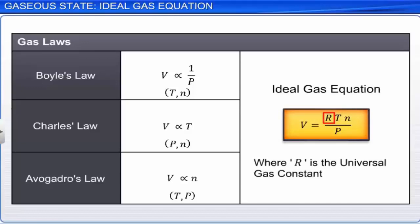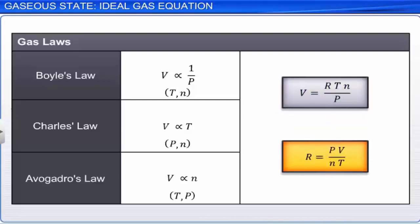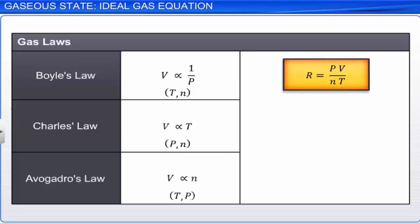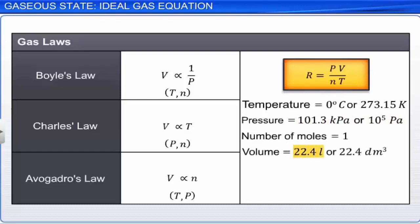For example, under standard conditions of temperature and pressure — that is, 0 degrees Celsius or 273.15 Kelvin, and pressure of 1 atmosphere or 101.3 kilopascal or 10⁵ pascal — 1 mole of a gas occupies 22.4 liters or 22.4 cubic decimeters. On substituting these values in the equation, we get the value of R as 8.314 joules per Kelvin per mole.